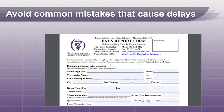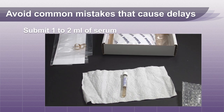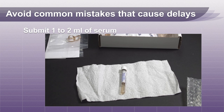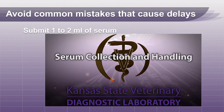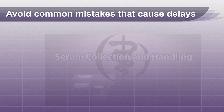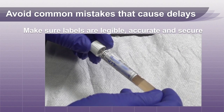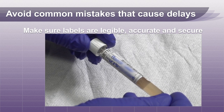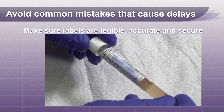It is very important that we are able to read your completed form. Submit 1 to 2 ml of serum in a 3 or 5 ml test tube. Our video on serum collection and handling will assist you in collecting the proper sample. The tube must be labeled legibly with the animal's microchip number and name, even if it is the only tube in the package.